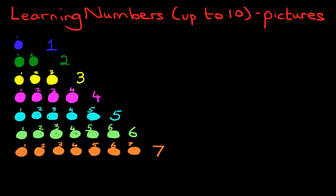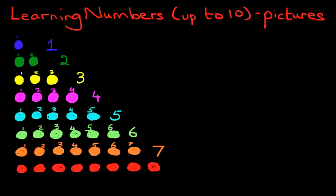Okay, now we're going to do red. This time I want you to count with me. Here we go. So how many red colored balls do we have? Well, let's count them. One, two, three, four, five, six, seven. What comes after seven? It is eight. So we've got eight red colored balls.